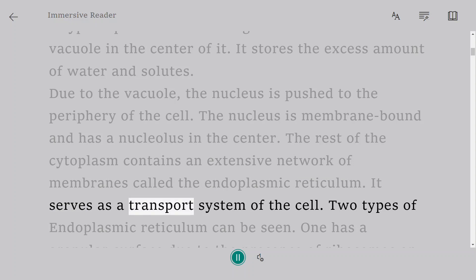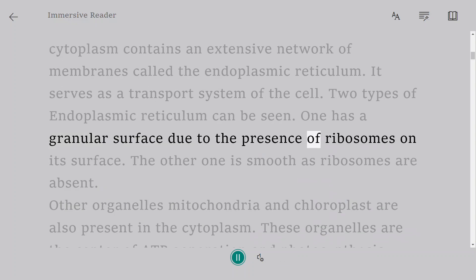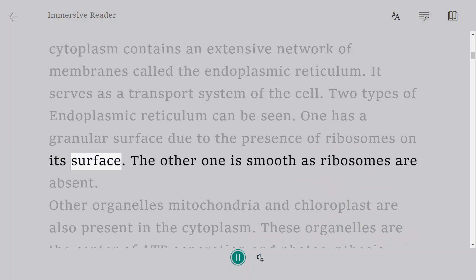The rest of the cytoplasm contains an extensive network of membranes called the endoplasmic reticulum. It serves as a transport system of the cell. Two types of endoplasmic reticulum can be seen. One has a granular surface due to the presence of ribosomes on its surface. The other one is smooth as ribosomes are absent.